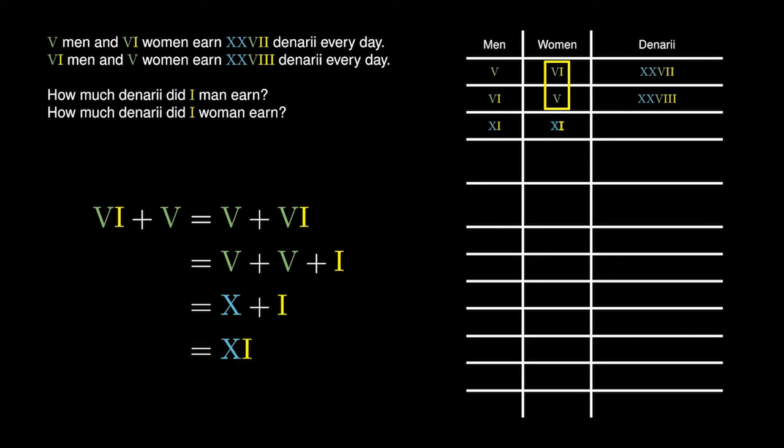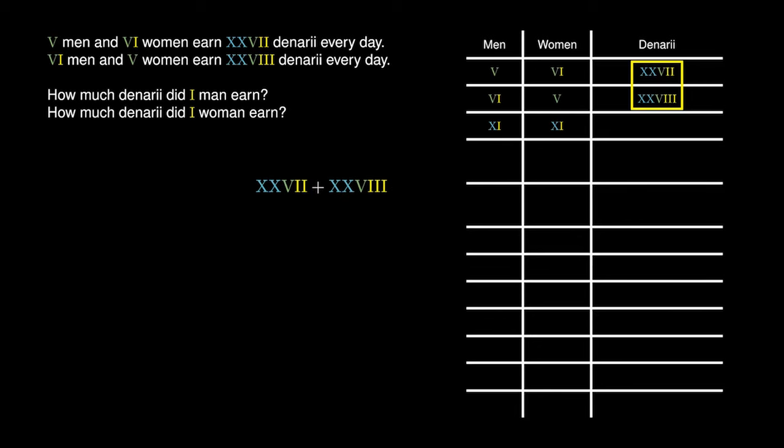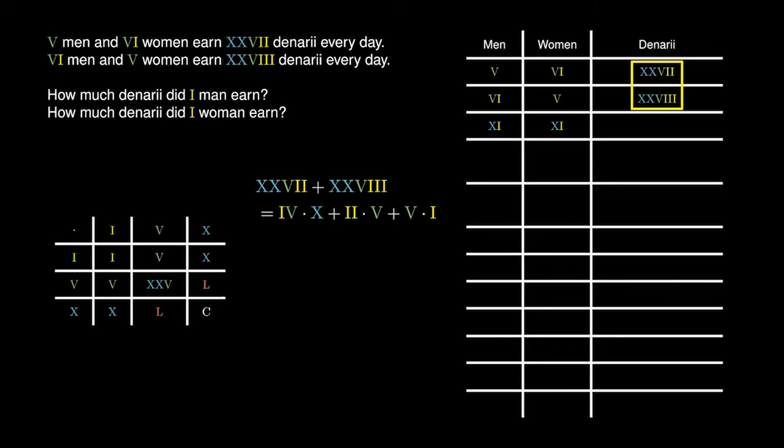And finally, we could add the denarii together. Adding 27 denarii and 28 denarii is a little more challenging. We observe that there are 4 tens, 2 fives, and 5 ones when we add 27 to 28. We probably would have in mind a quick multiplication table. For example, in the first calculation, we see that 5 times 1 equals 5, and we can break up 2 times 5 into 5 plus 5, which equals 10.